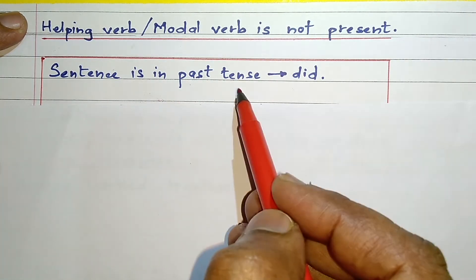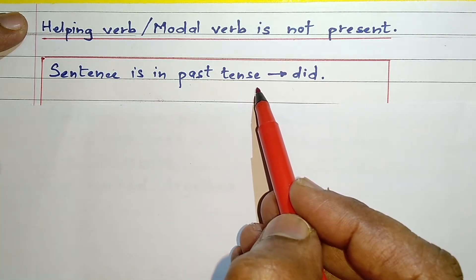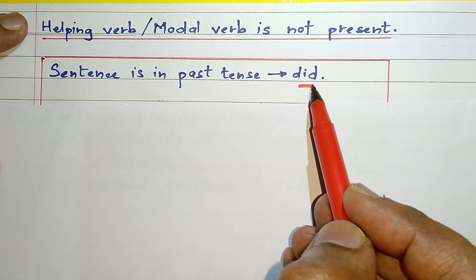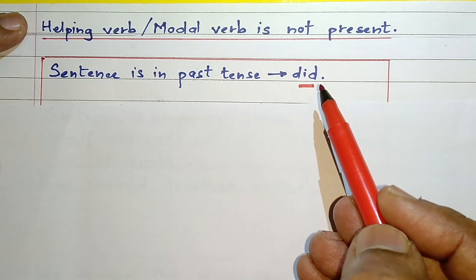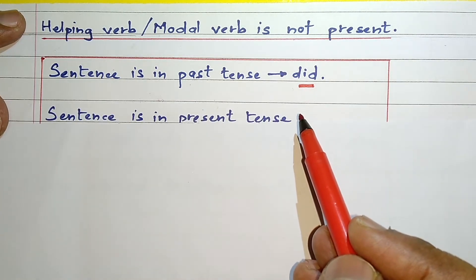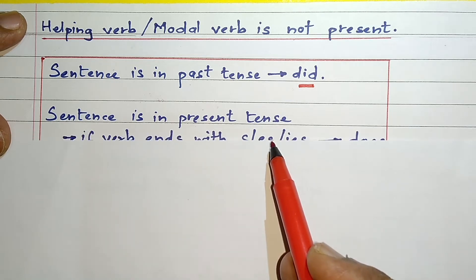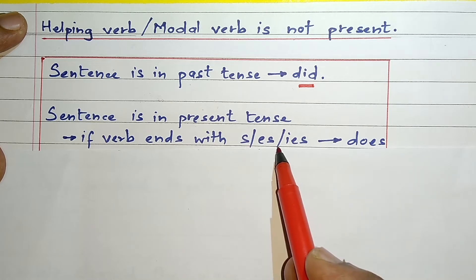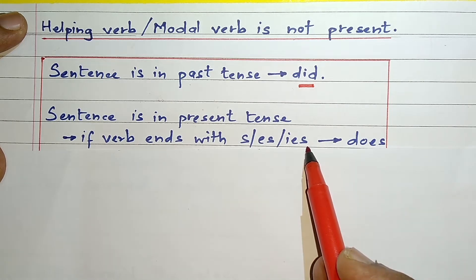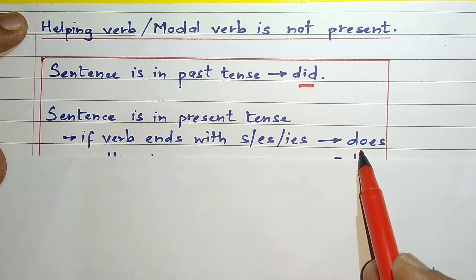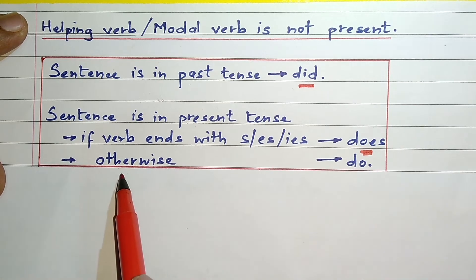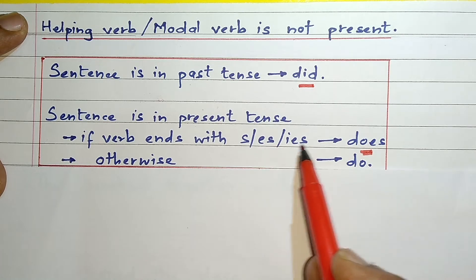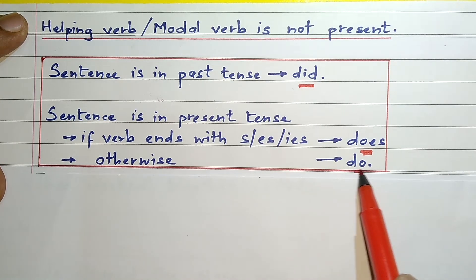If our sentence is in the past tense and the helping verb is not given, then we can assume 'did' as the helping verb or auxiliary verb. And if the sentence is in present tense and the verb in the sentence ends with S, E-S, or I-E-S, then we have to assume 'does'. Otherwise, if the verb does not end with S, E-S, or I-E-S, then we have to assume 'do'.